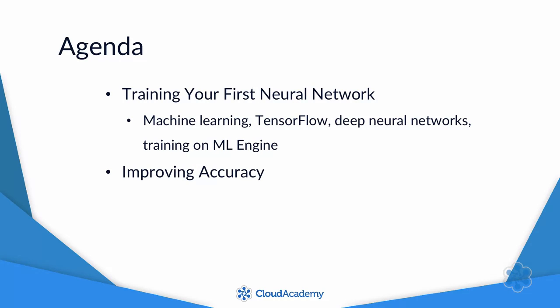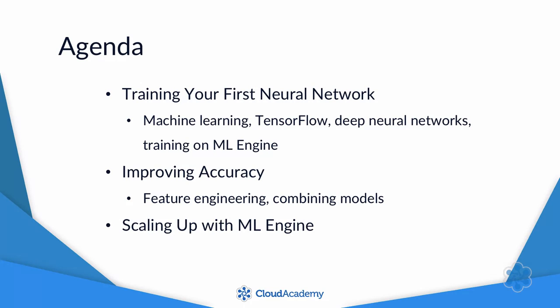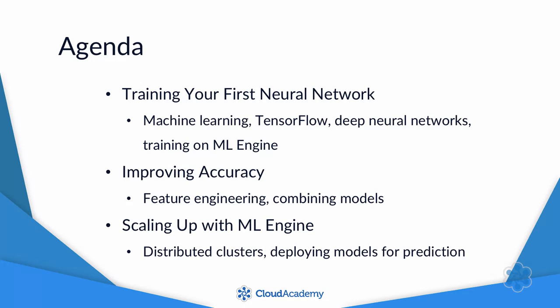To see how to improve the accuracy of models, we'll use feature engineering and then combine two different types of models. After that, we'll scale up by training a model using a distributed cluster on ML Engine, and then deploy the trained model so we can use it to make predictions. If you're ready to learn how to train a machine learning model on the Google Cloud platform, then let's get started.